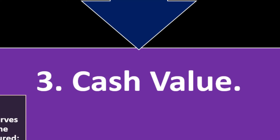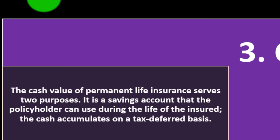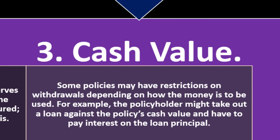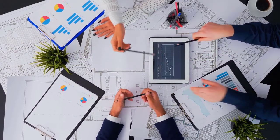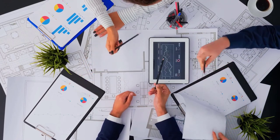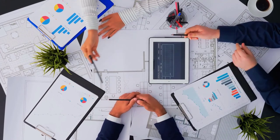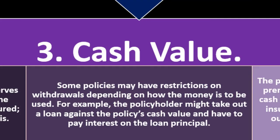Cash value in permanent life insurance serves two purposes. It is a savings account the policyholder can use during the life of the insured — the cash accumulates on a tax-deferred basis. Some policies may have restrictions on withdrawals depending on how the money is to be used. For example, the policyholder might take out a loan against the policy's cash value and pay interest on the loan principal, using the cash value as collateral.